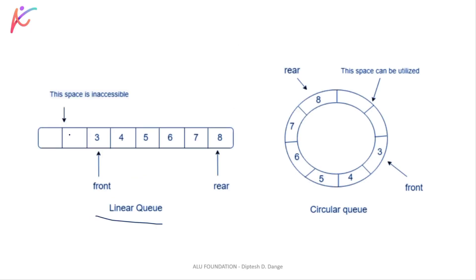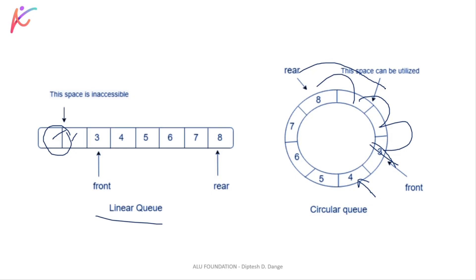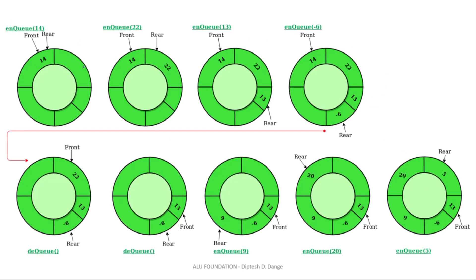This is a representation of linear Queue. देखो, यह space empty हो रहे हैं जब आप front को increment करते हैं — remove करते हैं तो यह space empty होती हैं, यह fill नहीं हो सकते हैं, तो आपकी memory waste होती है। लेकिन circular Queue में अगर आपने element remove किया, तो front यहाँ पर जाएगा। NQ 14 — पहले हमने 14 insert किया। जब एक ही element होता है तो front pointer and rear pointer are pointing to the same element।